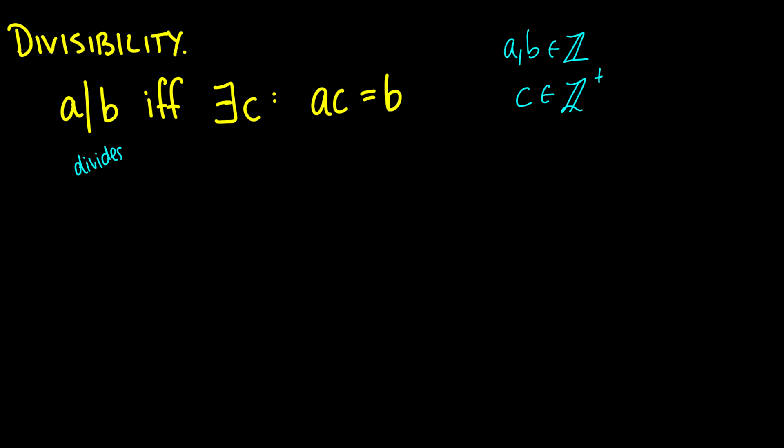So as an example, we know that 2 divides 8. So this means that 2 times some number C is equal to 8, and we know C is equal to 4. We then check, okay, is 4 a positive integer? Yes, therefore 2 divides 8.